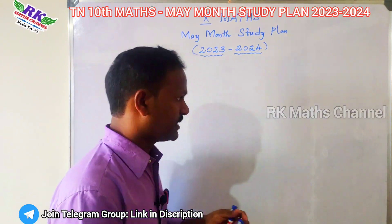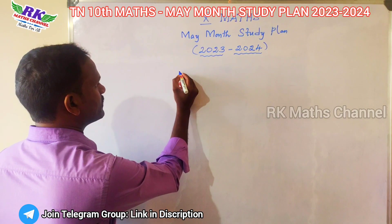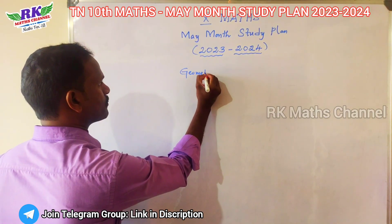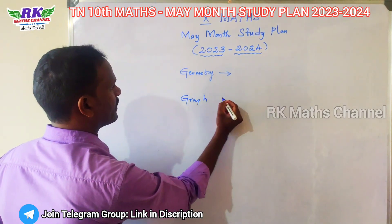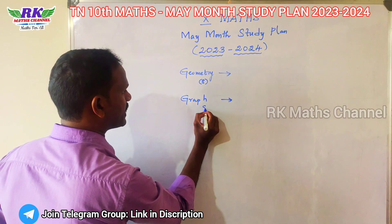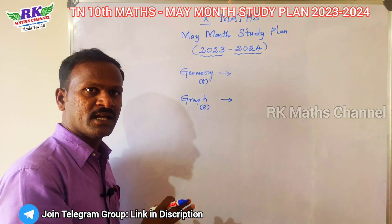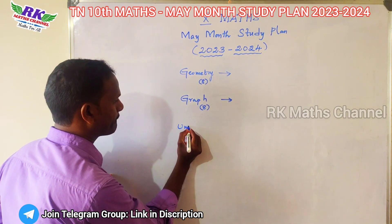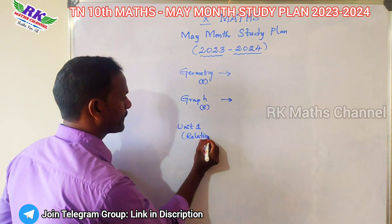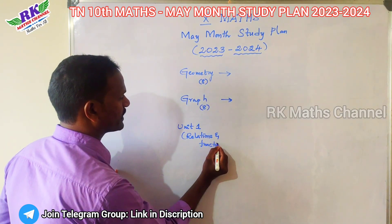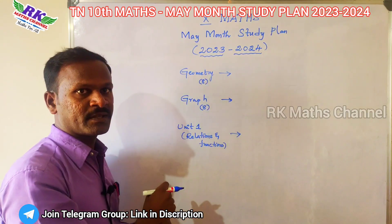Let's see this. If you look at the class, you will see graph and geometry. If you look at the graph, you will see the graph. So this is the graph — graph and relation functions.